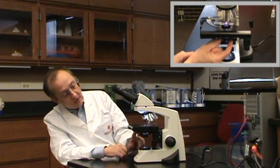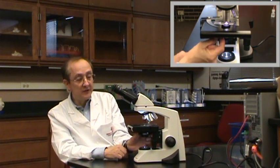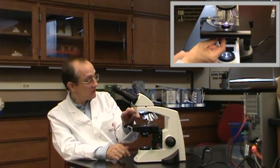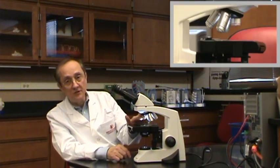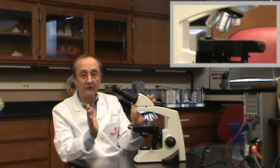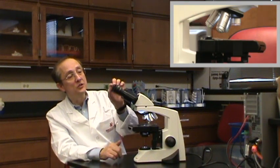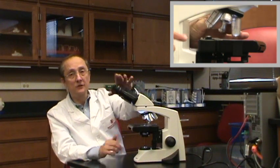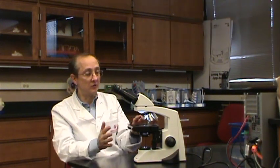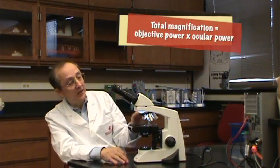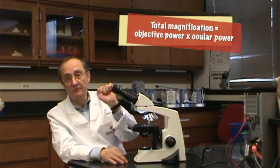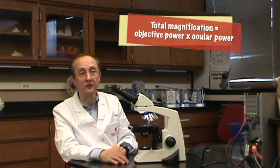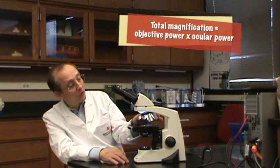The light is then transmitted up into the condenser, which condenses and focuses the light through the specimen on the stage, which then goes into the objective lens at the indicated magnification. That image is then transmitted to the oculars, which magnify ten times. To find the total magnification, simply multiply the objective magnification by ten — basically just add a zero.